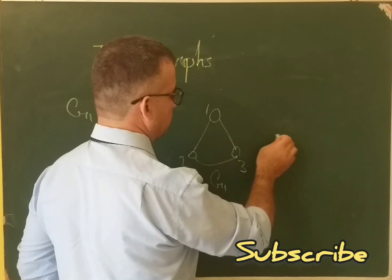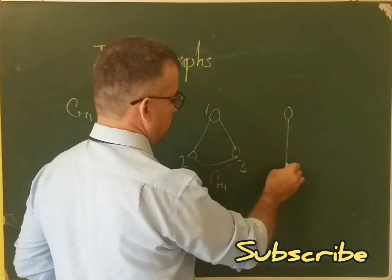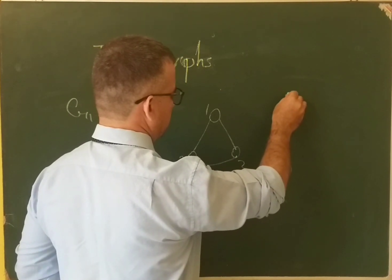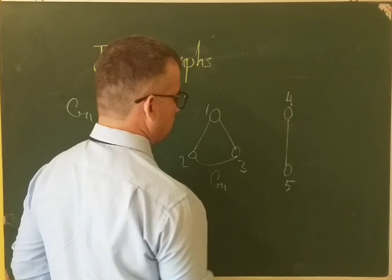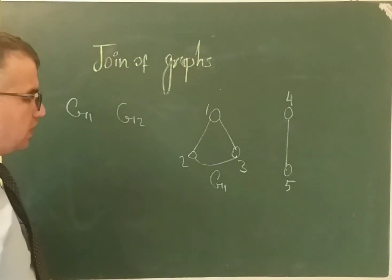Let me have this graph like this. This is graph two. To join these graphs, we are going to join every vertex of graph G1 to every vertex of graph G2.